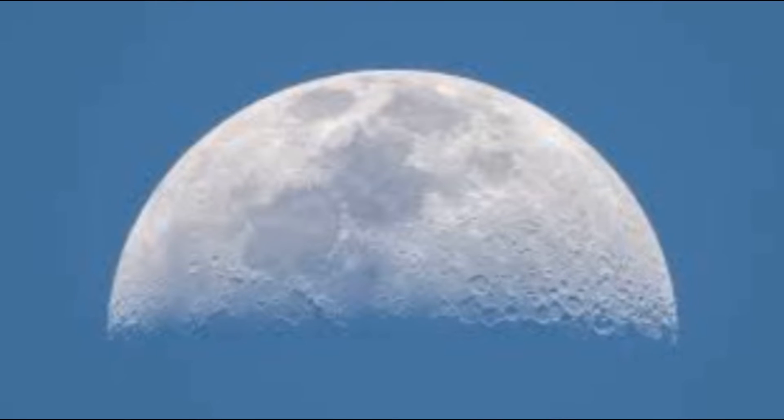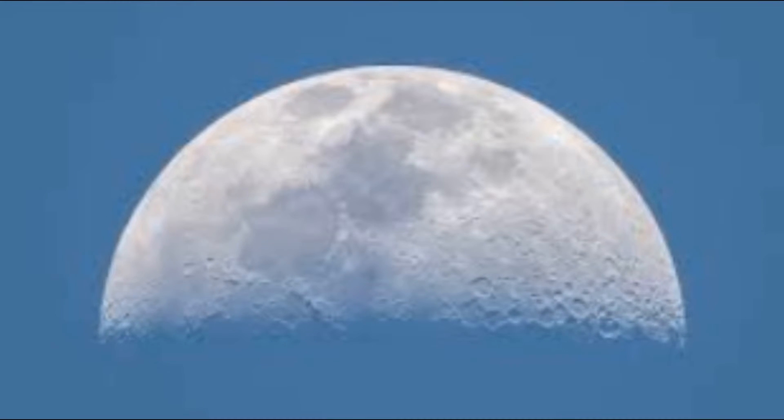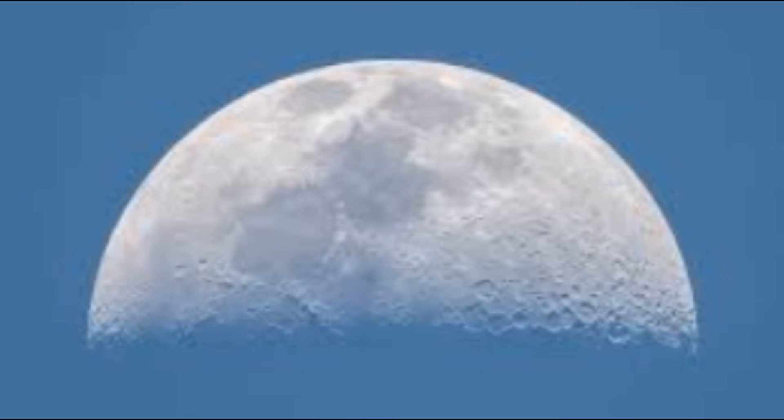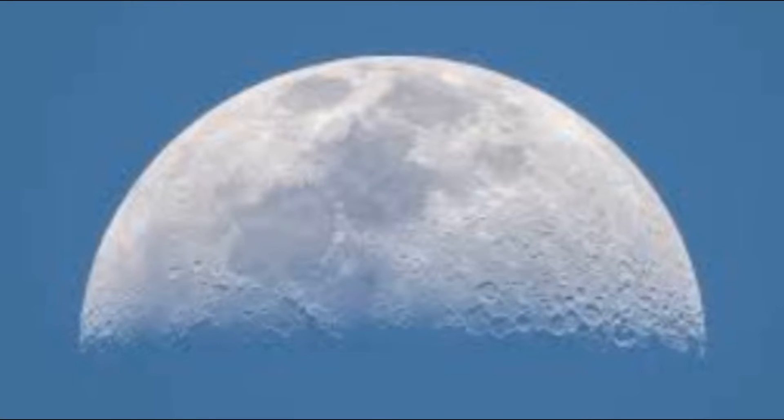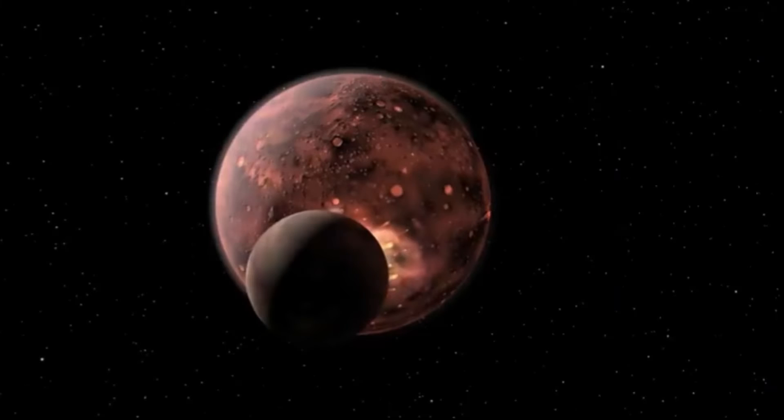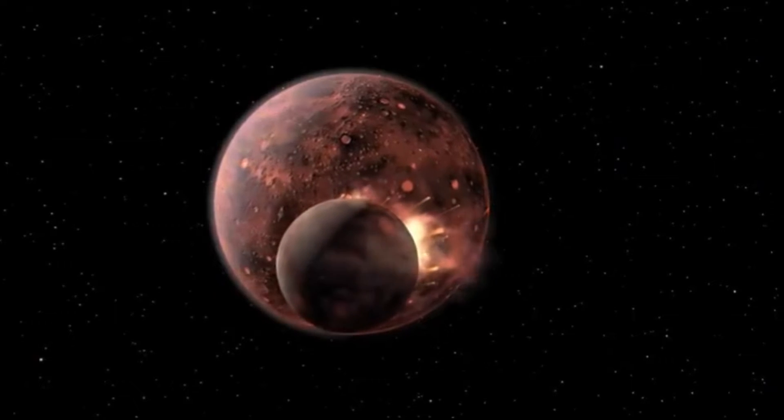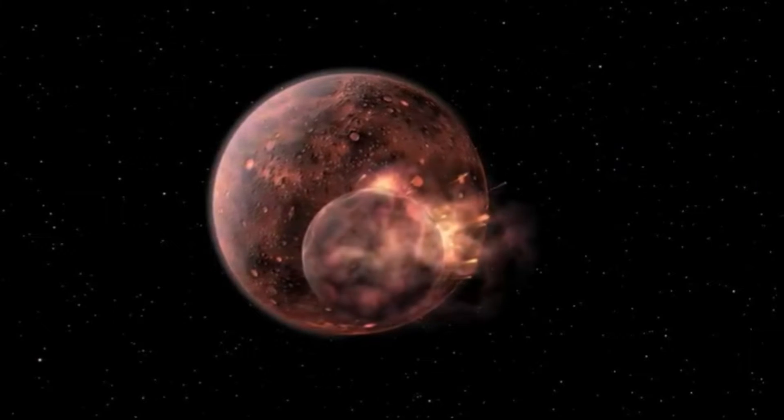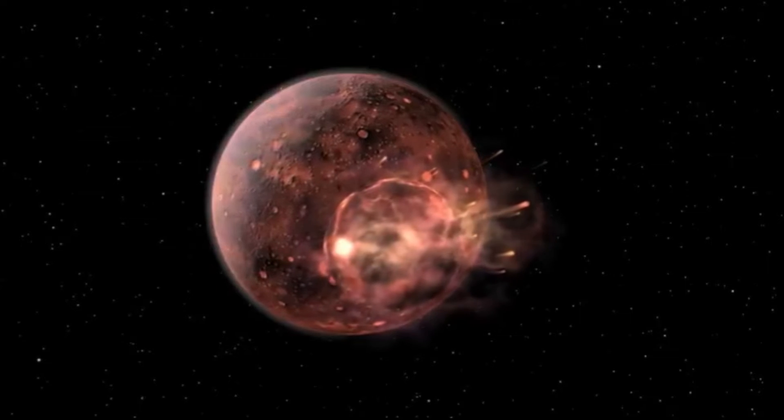The most widely accepted hypothesis today holds that the Moon was once a part of Earth. Evidence has been discovered by scientists that suggests a massive space object roughly the size of Mars collided with the side of our planet some 4.5 billion years ago.